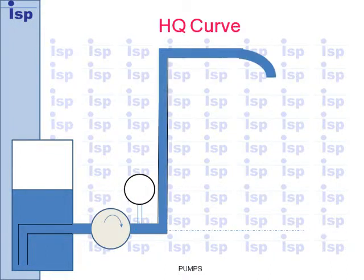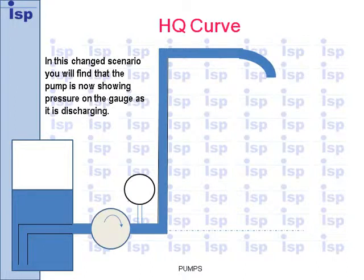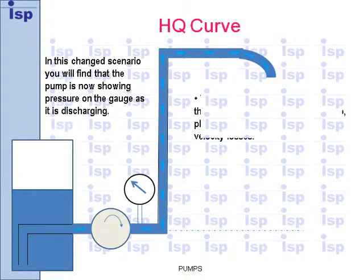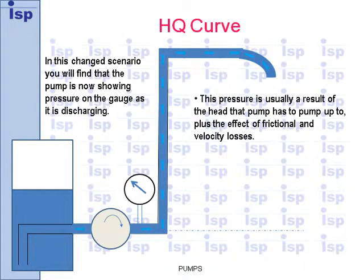In this changed scenario, you will find that the pump is now showing pressure on the gauge as it is discharging. This pressure is usually a result of the head that the pump has to pump up to, plus the effect of frictional and velocity losses.